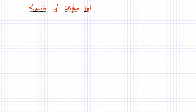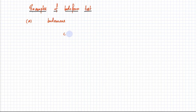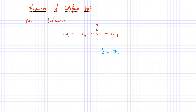Let's start with our first example. We'll see if butanone has a positive iodoform test, and if so, what the products are. Butanone has four carbon atoms with a C=O double bond in the middle — two carbons on each side. Looking carefully, butanone has the structure needed for a positive iodoform test: you have CH₃ bonded to C=O and then the rest of the molecule. So the iodoform test is going to be positive.